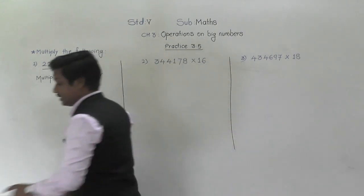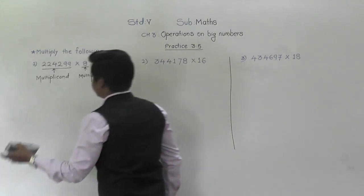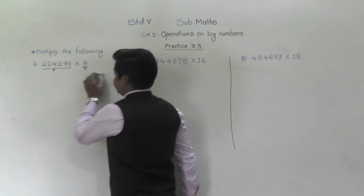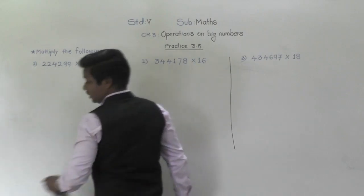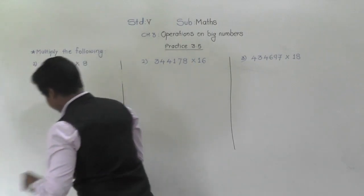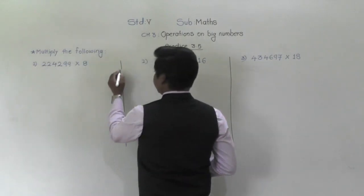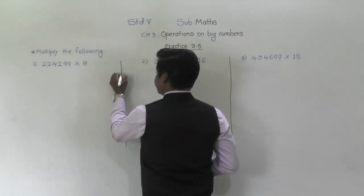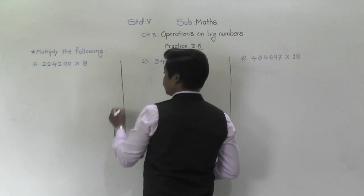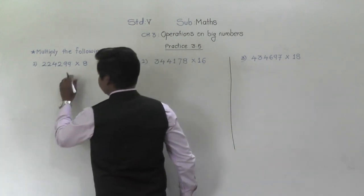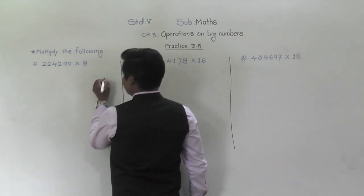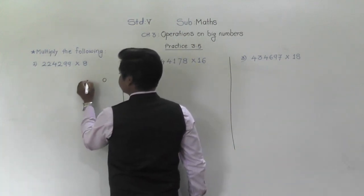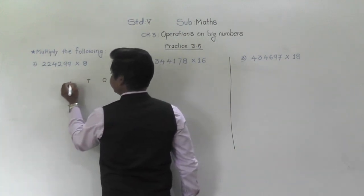You know the table of 8, right? So first of all, we will arrange the digits according to their places — ones, tens, hundreds.